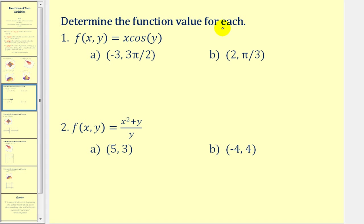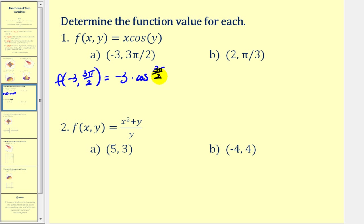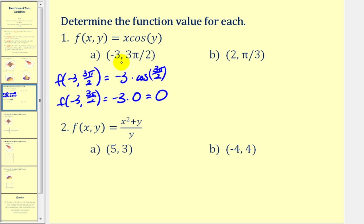Let's go and determine some function values. In order to evaluate this function, we need both an x and a y value, which are both given. We're going to replace x with negative 3 and y with 3π over 2. We'll have negative 3 times the cosine of 3π over 2, which is equal to zero. So this function value is zero. When x is negative 3 and y is 3π over 2, the z coordinate would be zero.